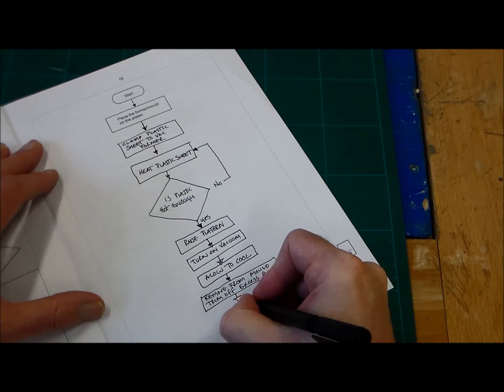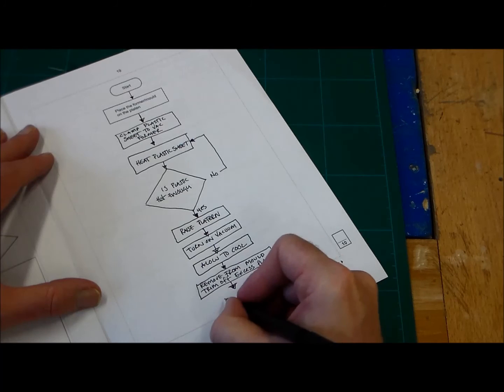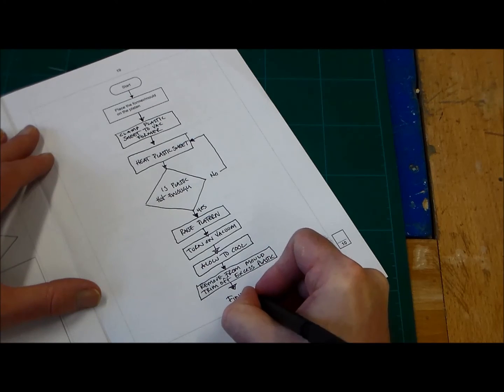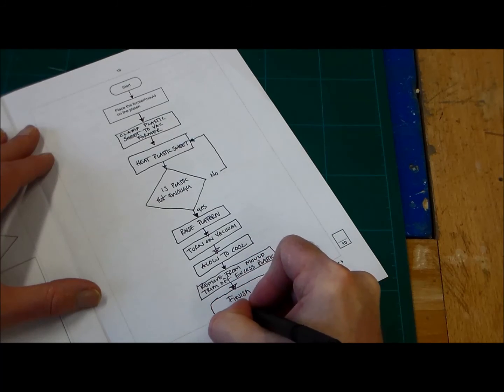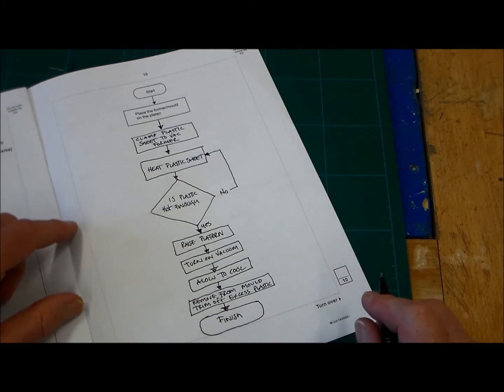And last of all, down the bottom here, we need to add a terminator, and that's finish. And our terminator is there. So there it is. There's our flow diagram.